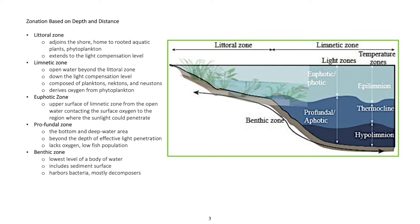The profundal zone is the bottom and deep water area beyond the depth of effective light penetration. It lacks oxygen and has a low fish population. The benthic zone is the lowest level of a body of water, includes sediment surface, and harbors bacteria that are mostly decomposers.